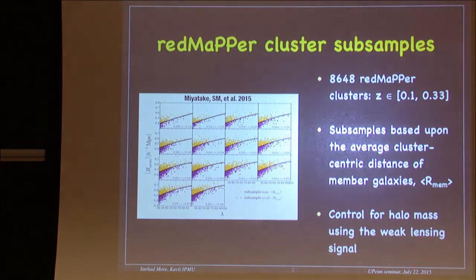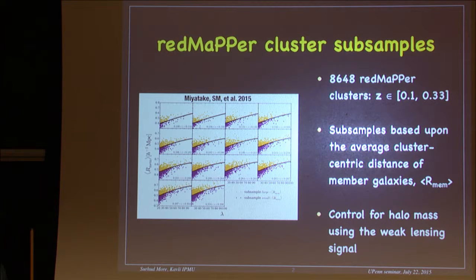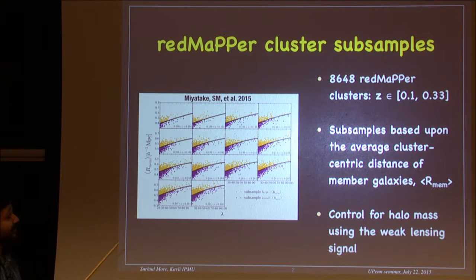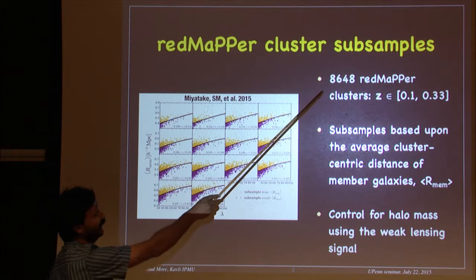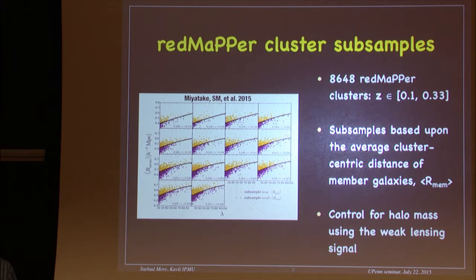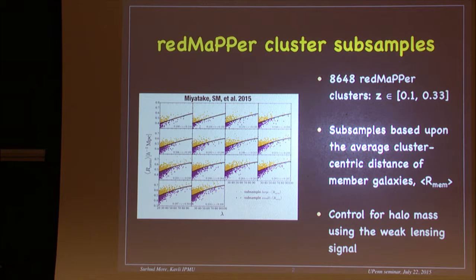Let me describe the observational samples we are using to detect halo assembly bias. We start with the RedMaPPer cluster catalog — about 8,500 RedMaPPer clusters in a redshift range between 0.1 and 0.33. That gives a roughly volume-limited sample where the richness is larger than 20, meaning the number of member galaxies in these clusters is more than 20.